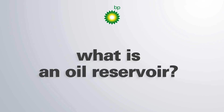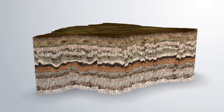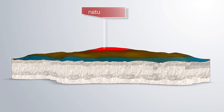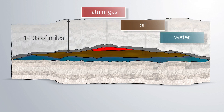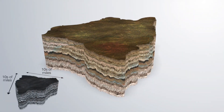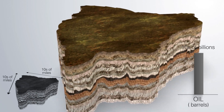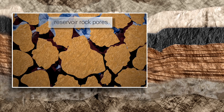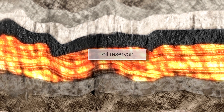Oil reservoirs are vast layers of porous rock containing natural gas, oil, and water, typically buried a mile or more underground. The largest ones may be spread over many tens of miles and contain billions of barrels of oil. The porous rock has enough permeability to allow oil and water to flow through it.